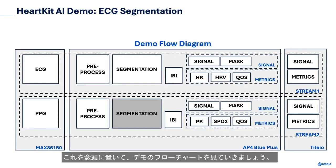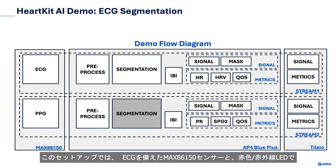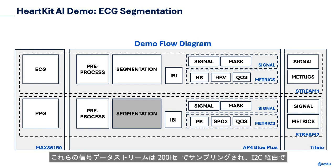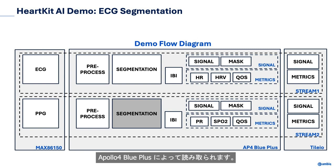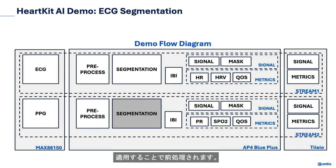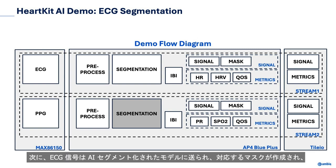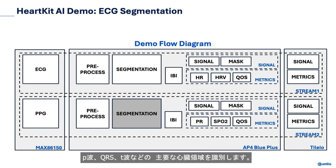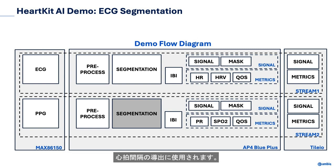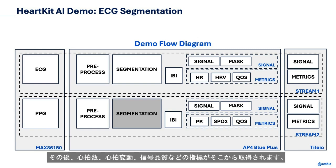Let's walk through the flow diagram of the demo. In this setup, we are using a MAX86150 sensor to read ECG along with two PPG channels consisting of both a red and infrared LED. These signal streams are being sampled at 200 Hz and read from the Apollo 4 Blue Plus over I2C. The signals are pre-processed by applying bi-quad filters along with normalization. The ECG signal is then fed into an AI segmentation model that creates a corresponding mask identifying the key cardiac regions such as P-wave, QRS, and T-wave. From the ECG signal and segmentation mask, beats are identified and used to derive the inter-beat intervals. Metrics captured include heart rate, heart rate variability, and quality of signal.